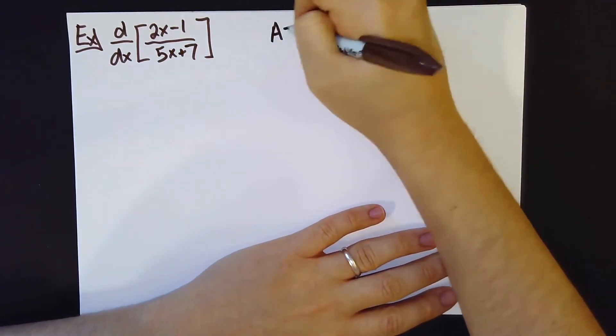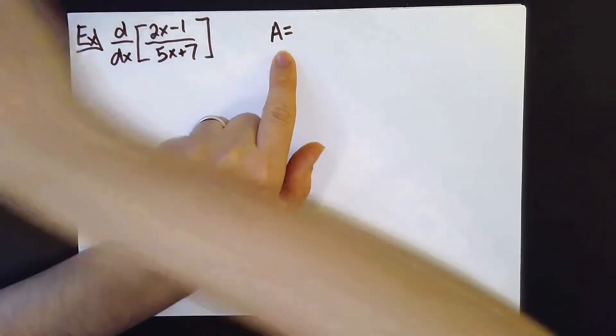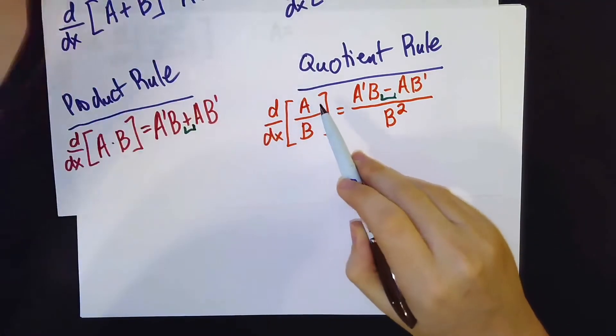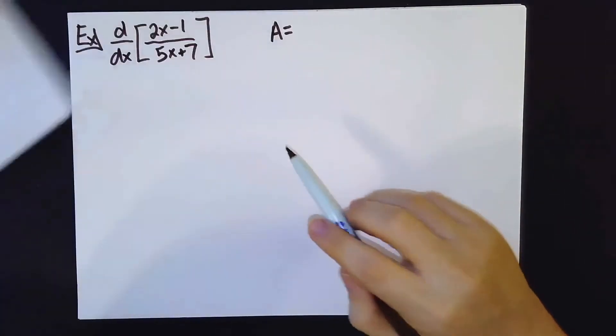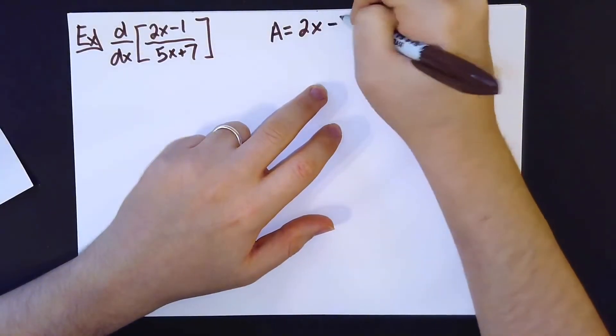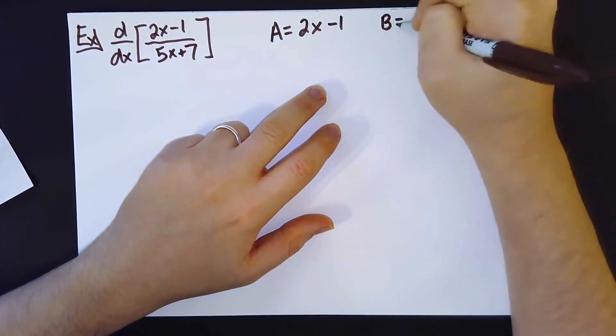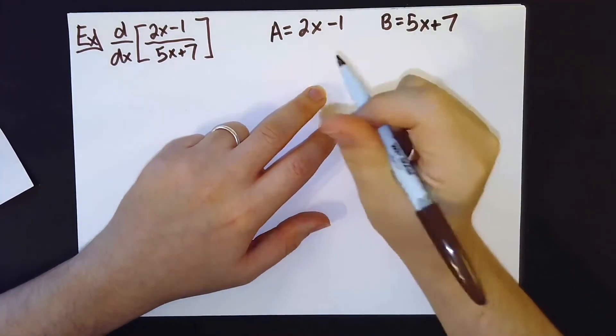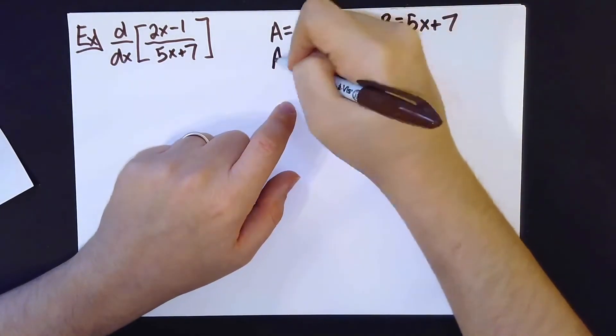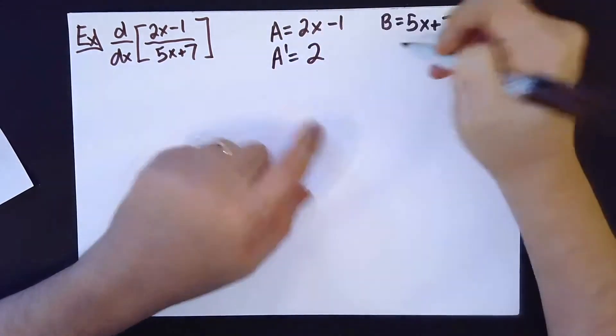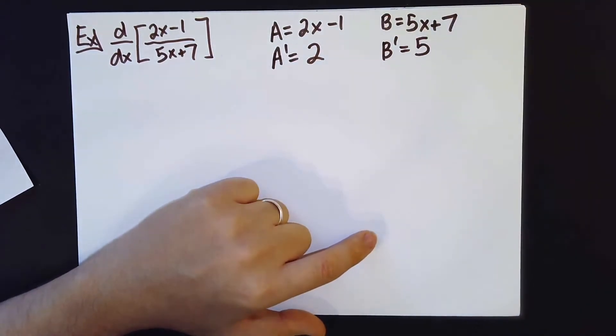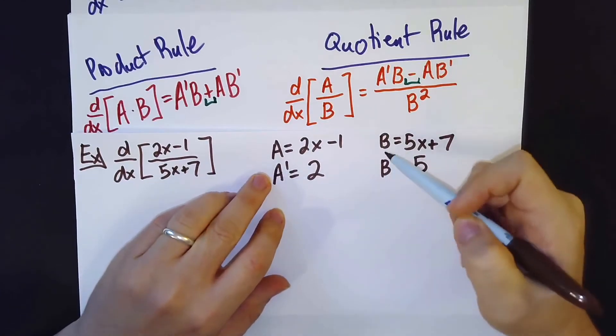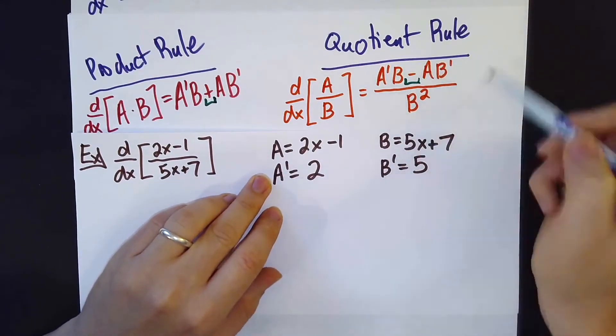So here is a sample quotient rule question that you really can't do any way other than the quotient rule. So we're going to pick off our a, and note in the rule a has to be the numerator, I don't get to choose. So, namely a here is 2x minus 1, our b is 5x plus 7, and then I can take the derivatives a prime is 2, b prime is 5, and now I just have to sew these four pieces together in exactly the way they are sewn together here.